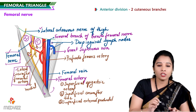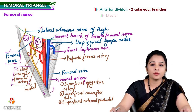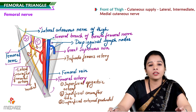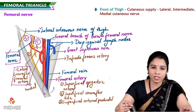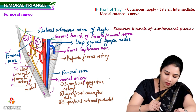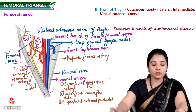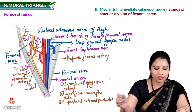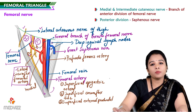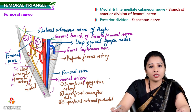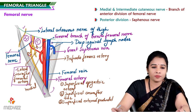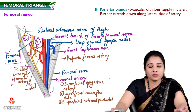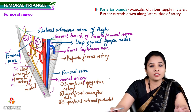The anterior division gives off two cutaneous branches: the medial and intermediate cutaneous nerves of the thigh. The front of the thigh is supplied by the lateral cutaneous nerve, intermediate cutaneous nerve, and medial cutaneous nerve. The lateral cutaneous nerve is a separate branch of the lumbosacral plexus, whereas the intermediate and medial cutaneous nerves are branches of the anterior division of the femoral nerve. The posterior division gives off only one cutaneous nerve — the saphenous nerve — along with muscular branches.